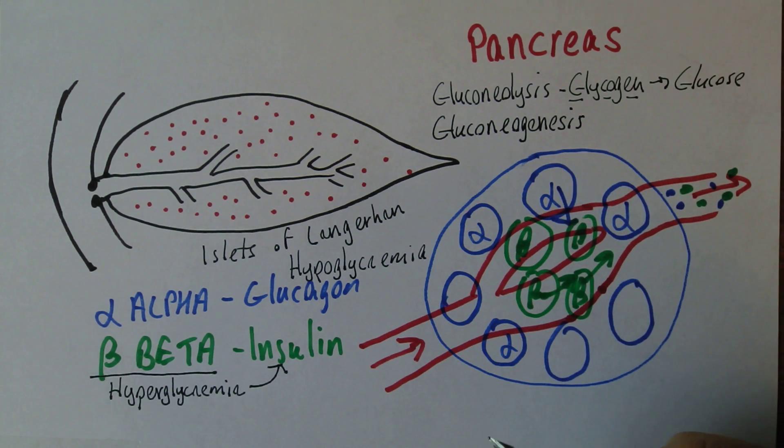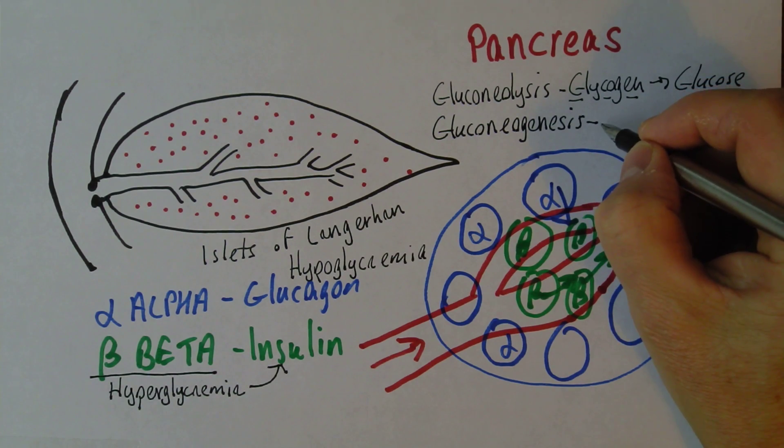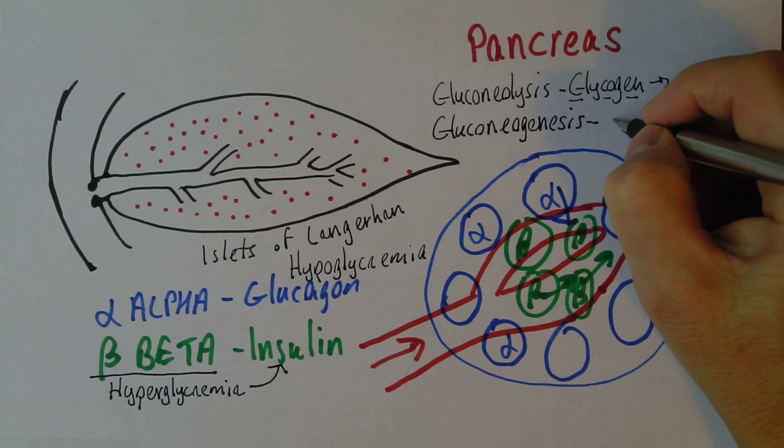And this process will take things like lactate and glycerol and a couple of fatty acids. So it will convert fatty-type molecules and protein molecules also into glucose. And that means you are raising blood glucose levels.